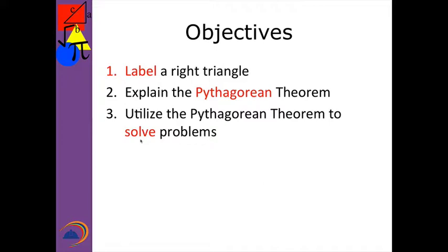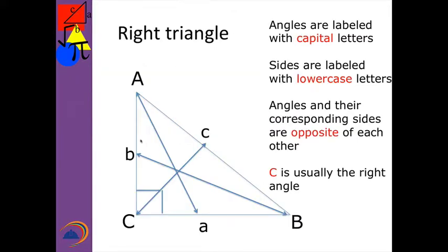So first of all, here are some reminders from geometry class. Angles are always labeled with capital letters. So in this triangle the angles happen to be angle A, angle B, and angle C. Sides are labeled with lowercase letters and they're always across from their corresponding angle — the angle drives everything. So across from angle C in this right triangle is the hypotenuse, and it would be lowercase c. C is usually the right angle. You'll find some problems in textbooks that might not be, but it's usually the default that the right angle is C.